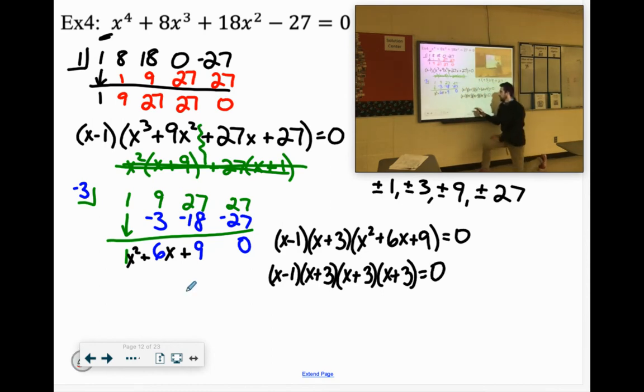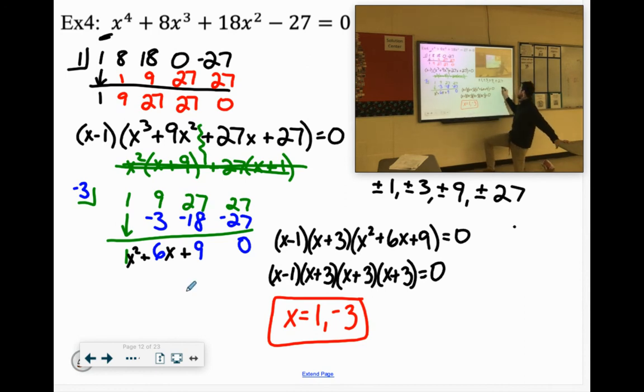Now as far as answers go, our 0s are 1 and negative 3. Now 1 is only in there once, so it's going to cross at 1. Negative 3 is in there 3 times, so it's going to bend at that negative 3. So if we were to sketch this out, 1, 2, 3, positive 1. From what I remember, this one looked quite goofy.